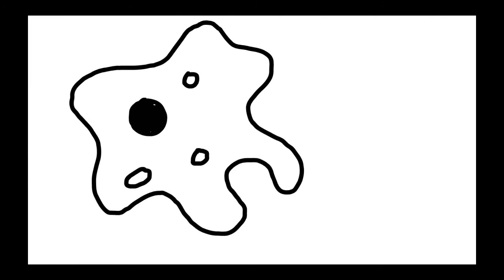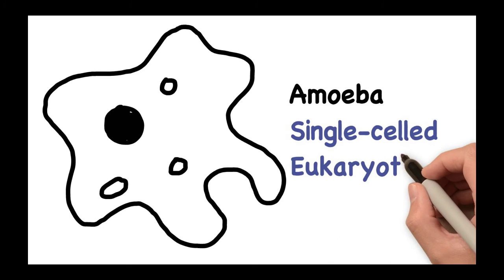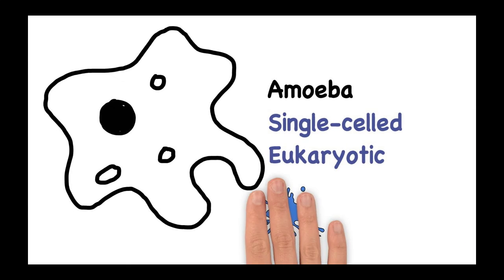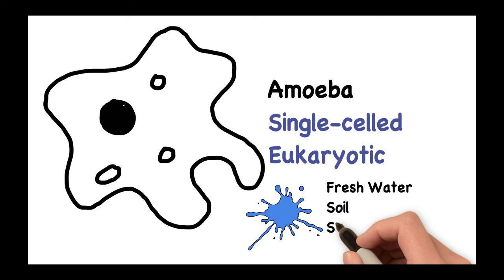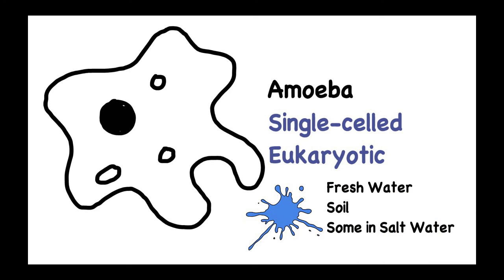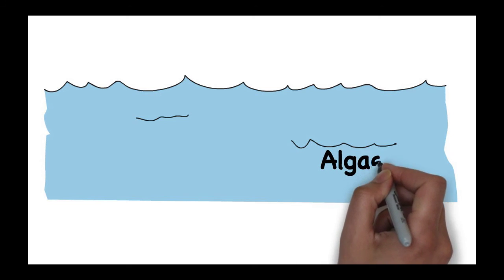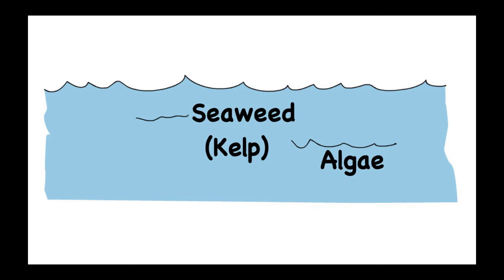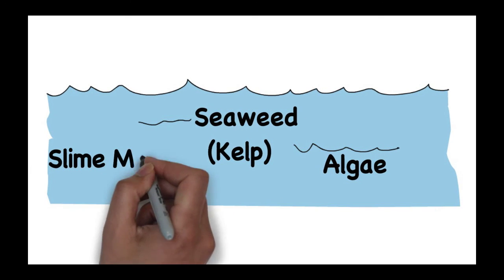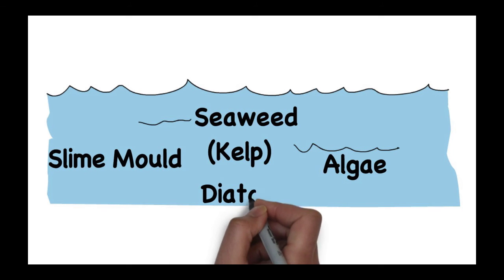An example of a protist is the amoeba — a single-celled eukaryotic organism that usually lives in fresh water, though it can also be found in soil and certain varieties live in salt water. Other protists include algae, seaweed (otherwise referred to as kelp), slime moulds, and tiny microscopic organisms known as diatoms that live in the ocean.